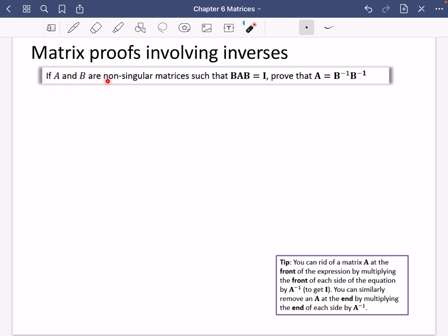It says, if A and B are non-singular matrices, such that BAB equals I, prove that A is equal to the inverse of B multiplied by the inverse of B.